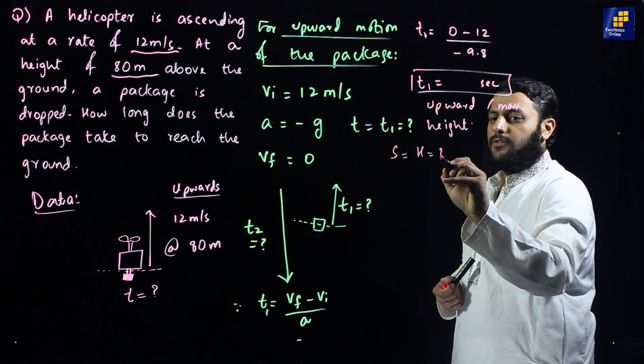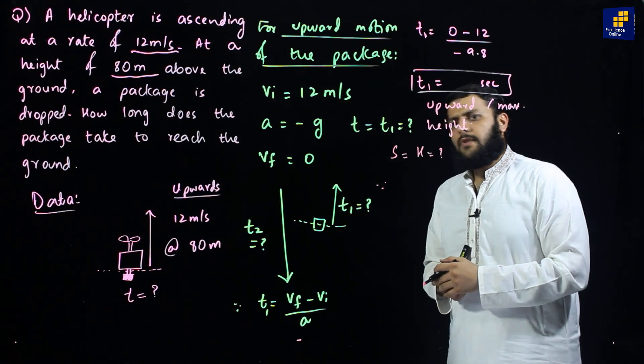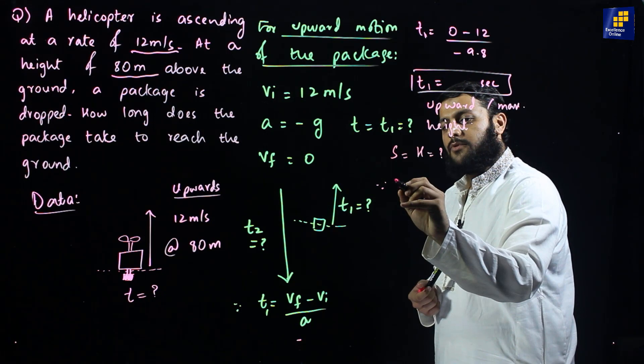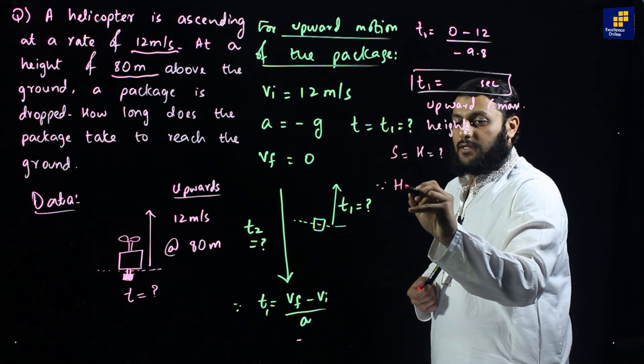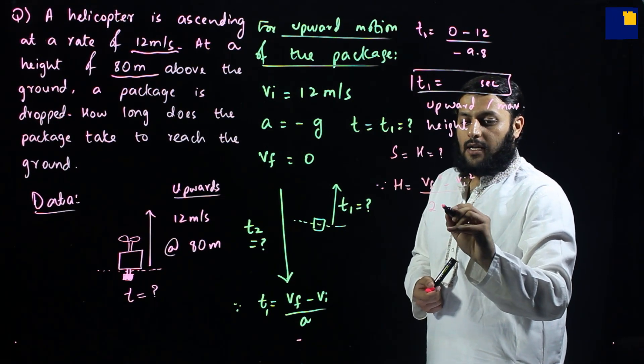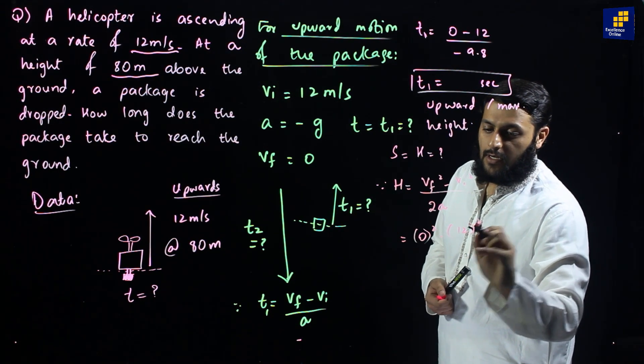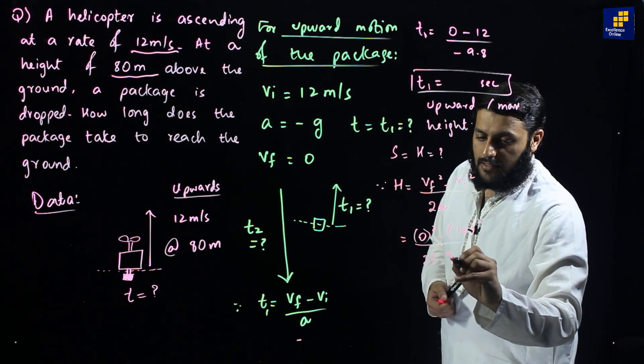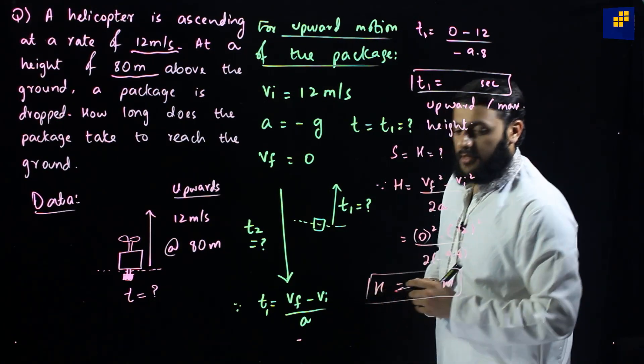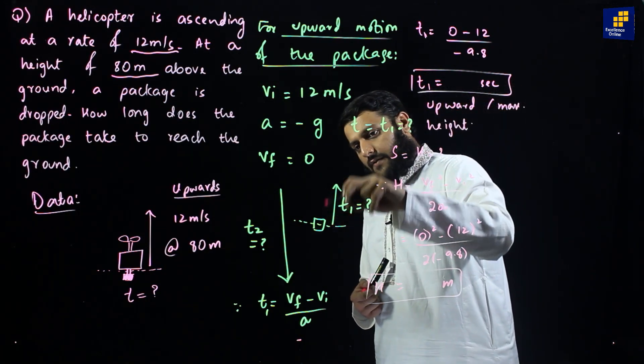Now, as soon as it goes up, it obviously covers some height. So let's find out that height. Let's say that height is h. What I can do now is, I guess we can use second equation of motion as well and third equation of motion as well. So it is completely up to you. Using h equals vf square minus vi square over 2a. So final velocity 0, initial velocity 12, 2 into minus 9.8. You get your height there.